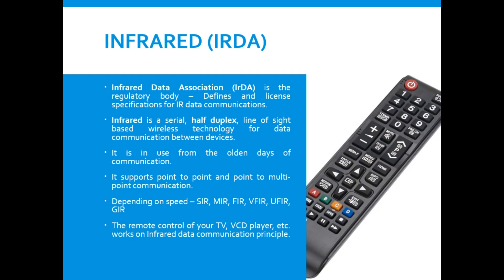Infrared has been in use since the early days and is a very popular communication method. What is new is that the speed has kept on being upgraded. In older days the speed was around 9600 bits per second, but now you can have infrared communication at speeds up to 1 Gbps.